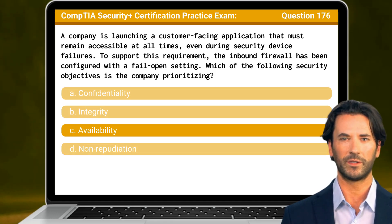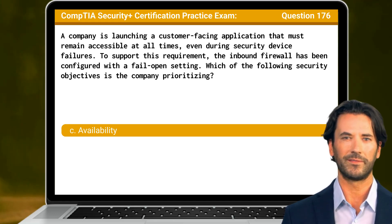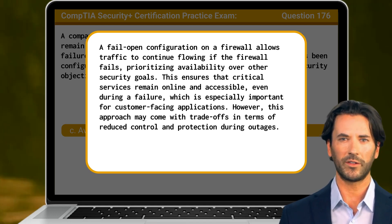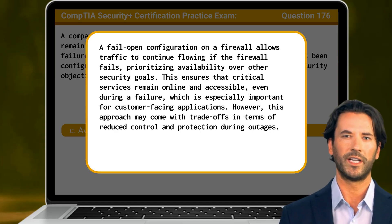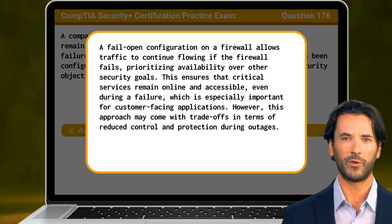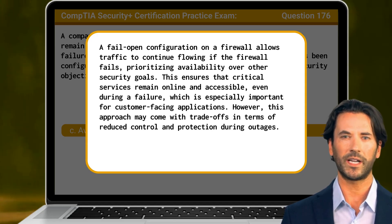The answer is C. Availability. A fail open configuration on a firewall allows traffic to continue flowing if the firewall fails, prioritizing availability over other security goals. This ensures that critical services remain online and accessible, even during a failure, which is especially important for customer-facing applications. However, this approach may come with trade-offs in terms of reduced control and protection during outages.